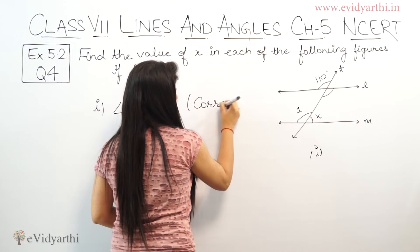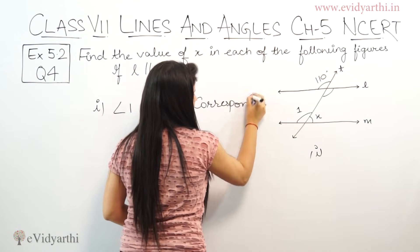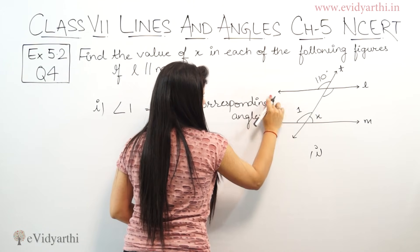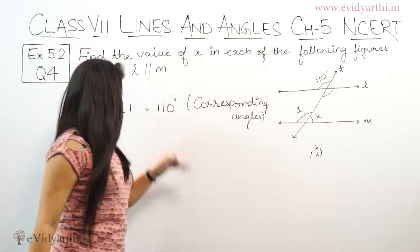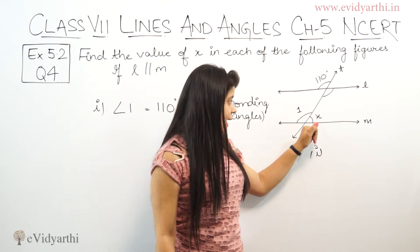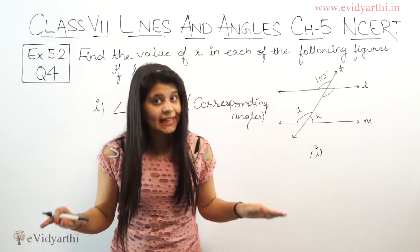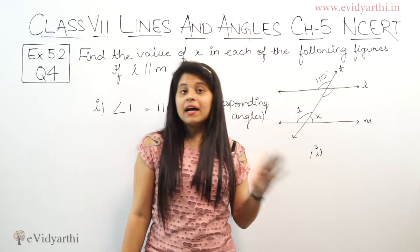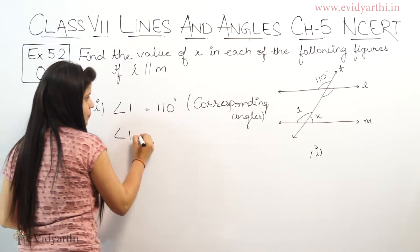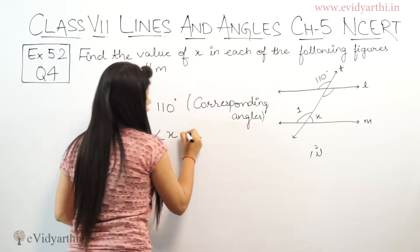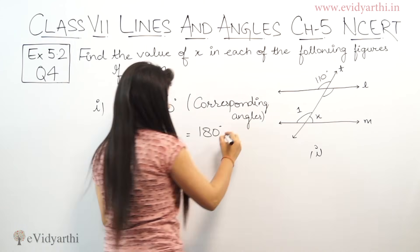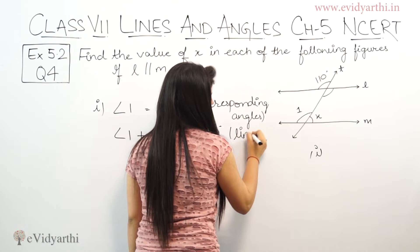So we write: corresponding angles. Now, angle 1 is equal to 110 degrees. Angle x and angle 1 form a straight line, which means this is a linear pair. And it means angle 1 plus angle x equals 180 degrees. Again, we have to give a reason. We will give: linear pair.